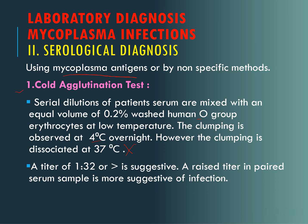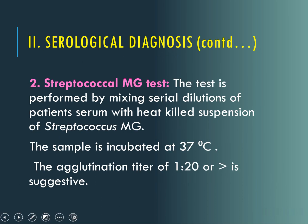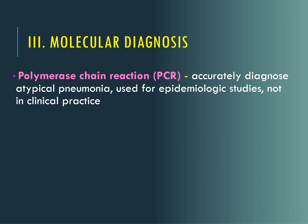A titer of 1:32 is indicative of the infection. The next serological method involves the Streptococcus MG test. The patient's serum is mixed with heat-killed Streptococcus MG and incubated at 37 degrees Celsius. A titer of 1:20 or more is suggestive of infection. For molecular diagnosis, polymerase chain reaction (PCR) is used for accurate diagnosis but is not routinely done in clinical practice.